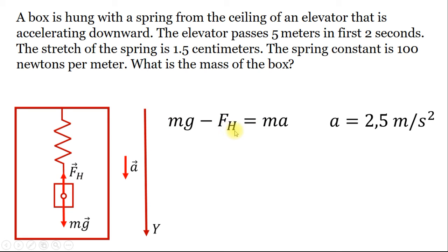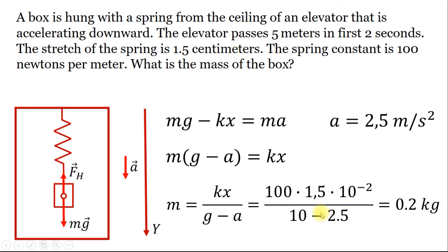The Hooke's force equals k multiplied by x, where k is the spring constant and x is the extension of the spring. So we obtain that m equals kx divided by g minus a. Now we just plug in the numbers and get the result: the mass of the box is equal to 0.2 kilograms.